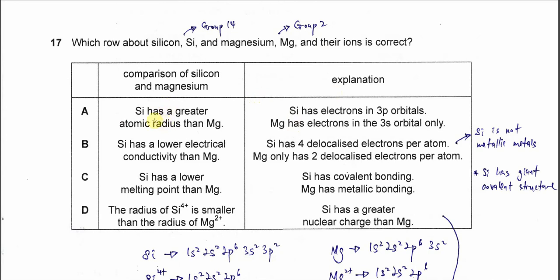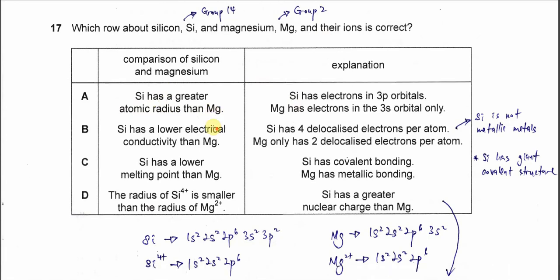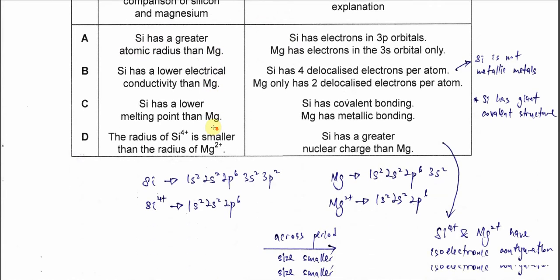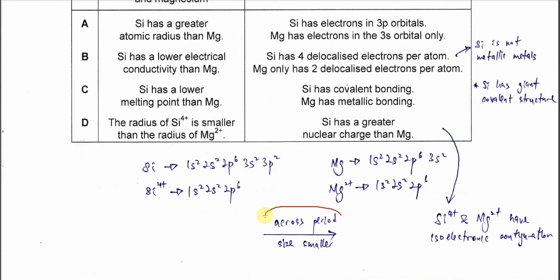A. Silicon has a greater atomic radius than magnesium. This statement is wrong because when going across the period, the size of the atom is smaller. Silicon is in group 14 and magnesium is in group 2, so silicon is smaller in size.